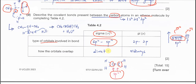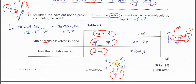In a double bond, there is always one sigma bond and one pi bond. The pi bond is formed by the sideways overlap of the two unhybridized p orbitals, one from each carbon. So the C=C bond in ethene consists of one sigma bond from sp2–sp2 head-on overlap and one pi bond from p–p sideways overlap.